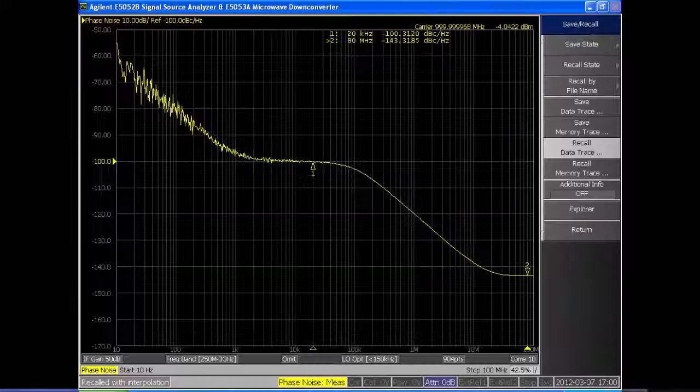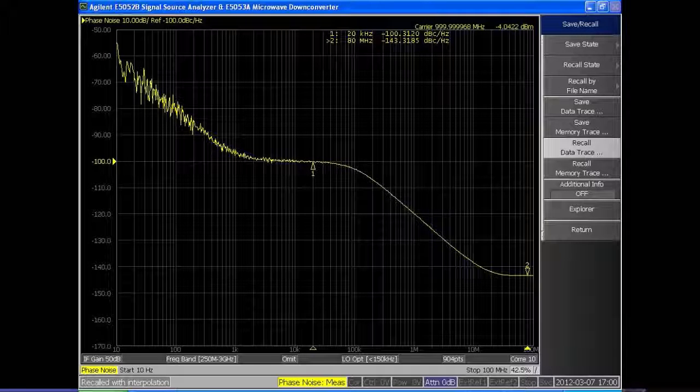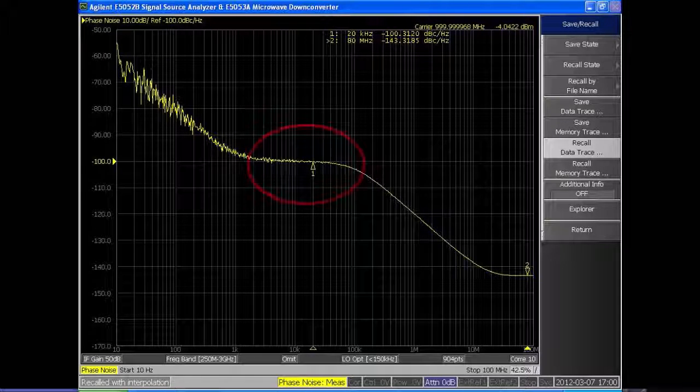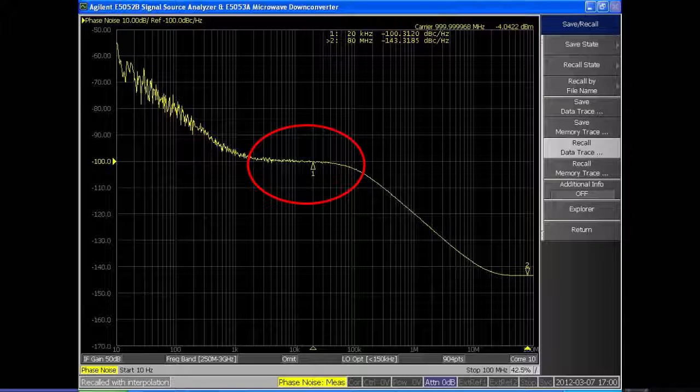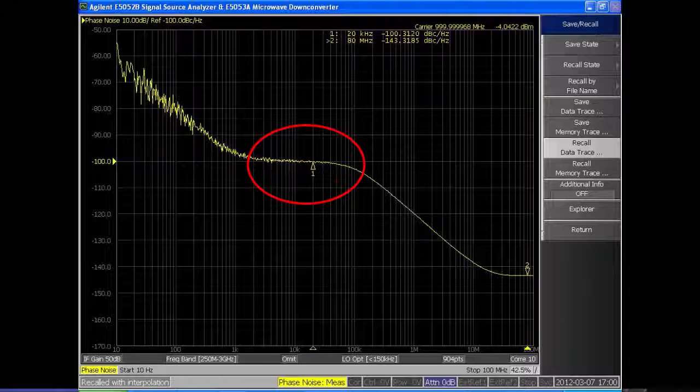When I turn this on you'll see that the phase noise impairments are added to the current phase noise plot. As we have here on the signal source analyzer from 1 kilohertz to 100 kilohertz we have minus 100 dBc of flat phase noise impairments. This is very important for testing your receiver to see how sensitive it is to phase noise.